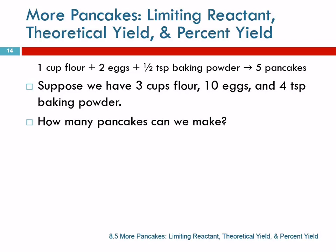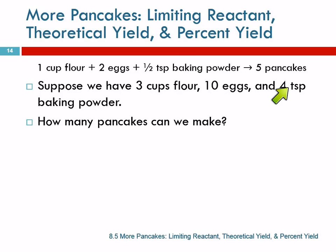How do we do that? So what you're doing in your heads — I can tell from the mumblings — you're saying, well, 3 cups of flour, I could make 15 pancakes, but 10 eggs, I could make 25 pancakes, 4 teaspoons of baking soda, 8 times this. So you look at each ingredient and see which one would make the least amount of pancakes.